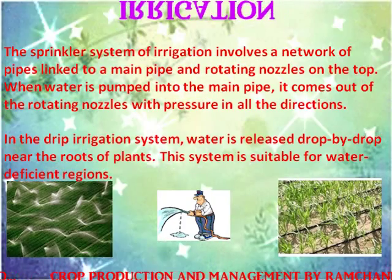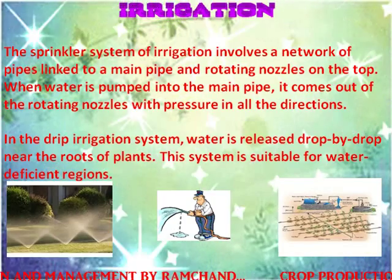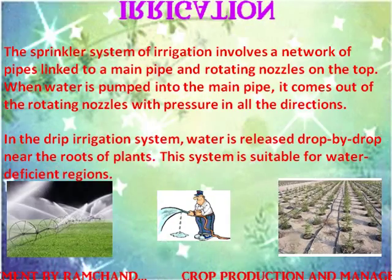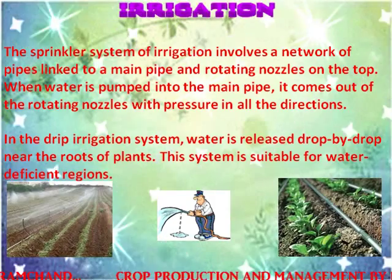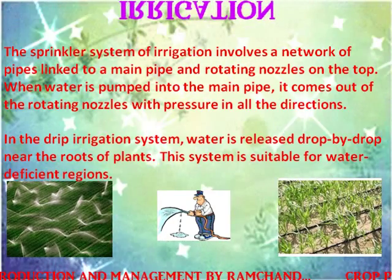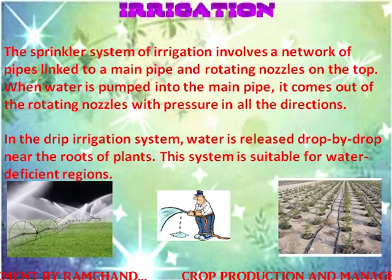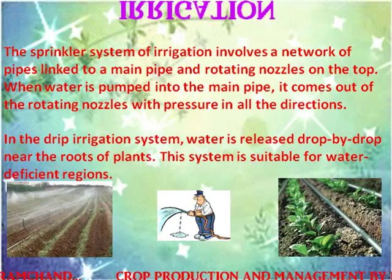In the drip irrigation system, water is released drop by drop near the roots of plants. This system is suitable for water-deficient regions.